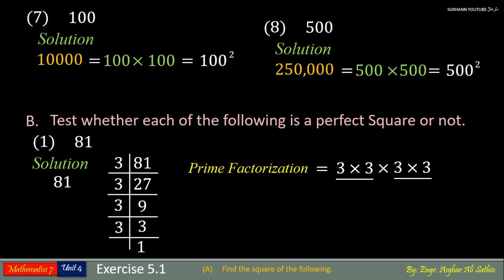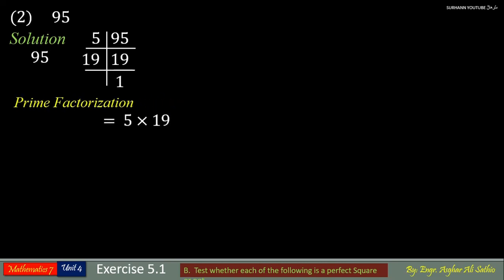If any factor is left from pairing, then the number is not a perfect square. So 81 is a perfect square. Now see problem number 2: 95. First of all, find and list all its prime factors. As you see here, no prime factor is in pairs. If there is no pair of a prime factor, then the number is not a perfect square. So 95 is not a perfect square.